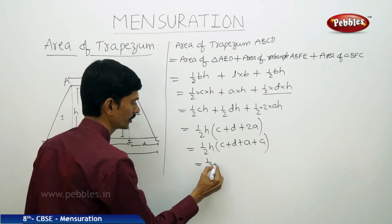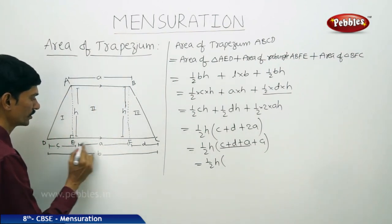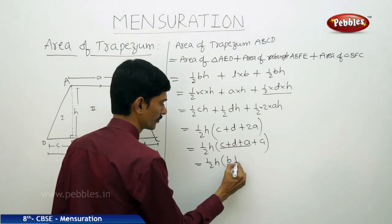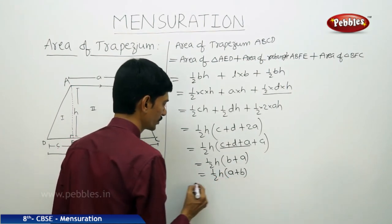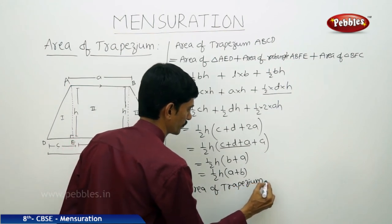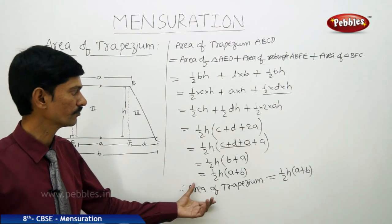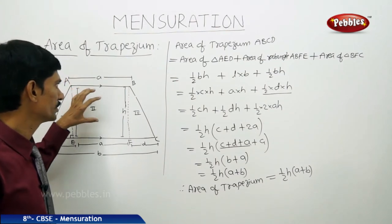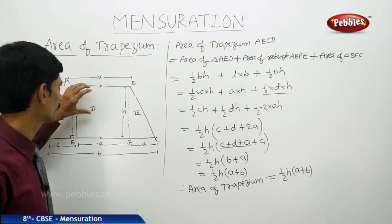This equals one half H times (C plus D plus 2A). Now C plus D plus A plus A can be written as A plus B, since DC equals B. So this equals half times H times (A plus B) square units — the same formula we proved before.